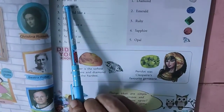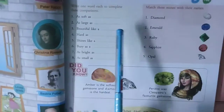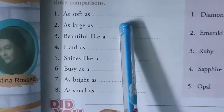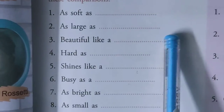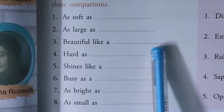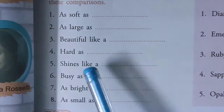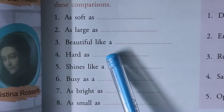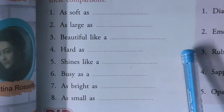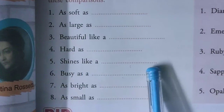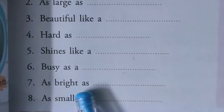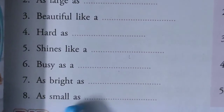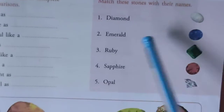The comparison. As soft as cheese, as large as ocean or life, beautiful like a peacock, hard as diamond or nails, shines like a sun, busy as a bee, as bright as crystal, as small as an ant. Now match the column.